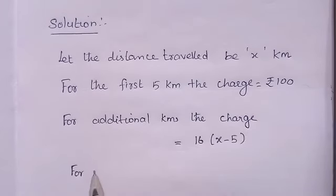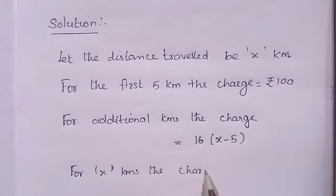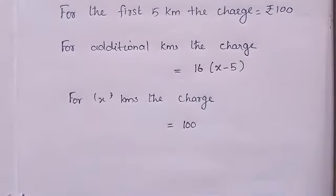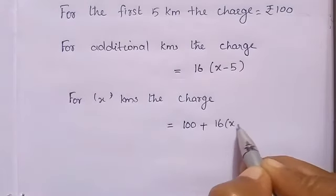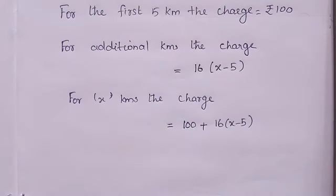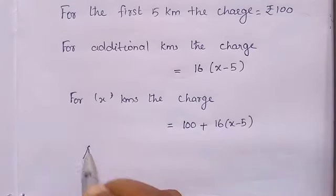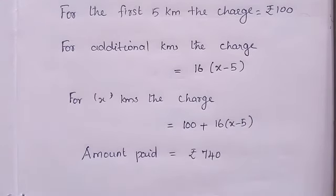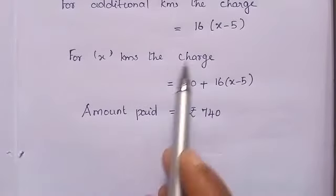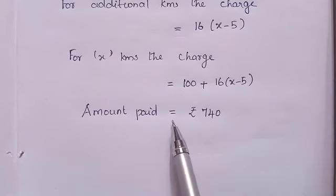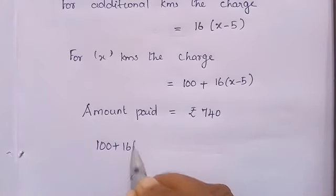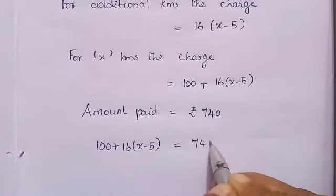For x km, the charge is equal to: 100 is the fixed charge plus 16 into (x minus 5) is the additional charge. Already given in the question, total amount paid equals Rs. 740. Now, we can equalize these. So, 100 plus 16 into (x minus 5) equal to 740.